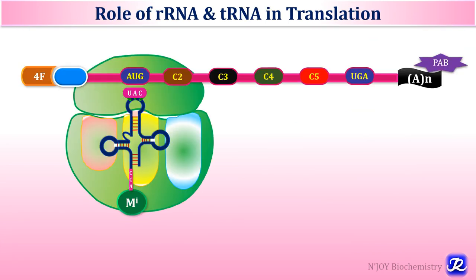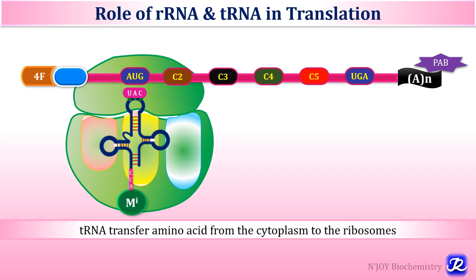In today's video we studied the role of ribosomal RNA in protein synthesis. Ribosomal RNAs are components of ribosomes, which are the factories of protein synthesis, and transfer RNA carries amino acids from the cytoplasm to the ribosomal protein-synthesizing machinery. All three types of RNA — messenger RNA, ribosomal RNA and transfer RNA — are required in the process of translation, with tRNA carrying specific amino acids to the ribosome so that nucleotide sequence information in mRNA can be translated into amino acids.